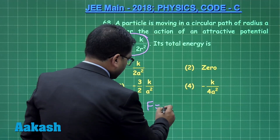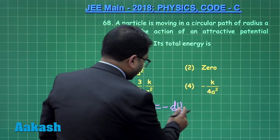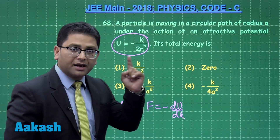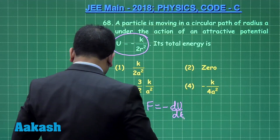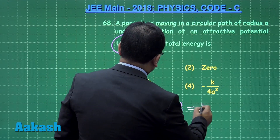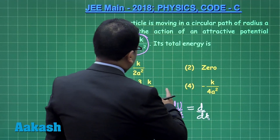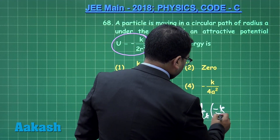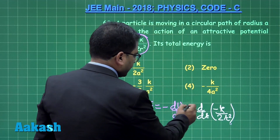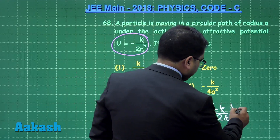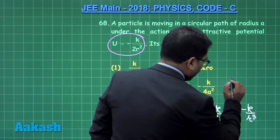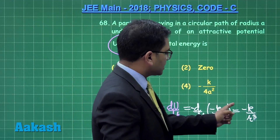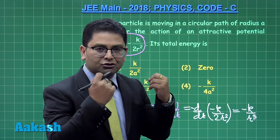The force can be written as F equals minus du/dr. Writing this expression means the force has no theta component, i.e., the field is radially symmetric. Putting the value of u and differentiating: F = -d/dr of (-k / 2r²), the two negatives cancel, giving F = -k / r³.